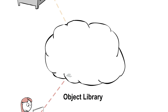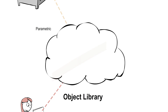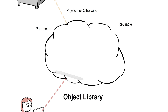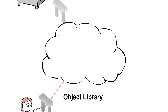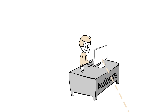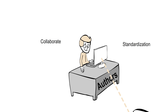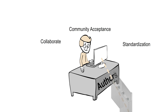OpenBrim Library is a cloud app where parametric, reusable bridge objects — physical or otherwise — can be developed and communicated within the industry. It is an open, collaborative development and management platform for OpenBrim objects. Anyone can create Brim objects using OpenBrim Library. Authors are the owners and ultimately in charge of the objects they create. Authors can collaborate with other authors, choose to pursue objects towards standardization, or simply open objects up for discussion for wider community acceptance.